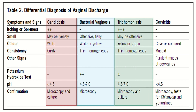In trichomoniasis: itching or soreness is present, smell may be offensive, color is yellow or green, consistency thin or homogeneous, potassium hydroxide test is positive or negative, pH is 4.5 to 7, confirmed by microscopy and culture. In cervicitis: color is clear or colored, consistency is mucoid, with purulent mucus at the cervical os, KOH test is negative, pH is less than 4.5, confirmed by microscopy and tests for chlamydia and gonorrhea.